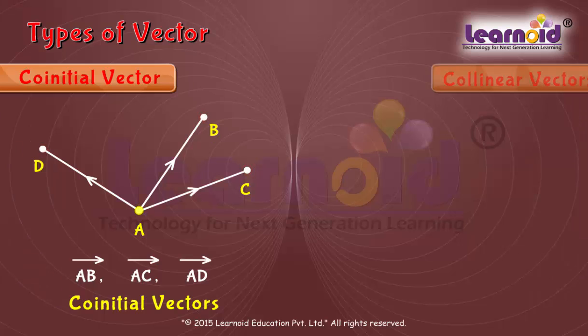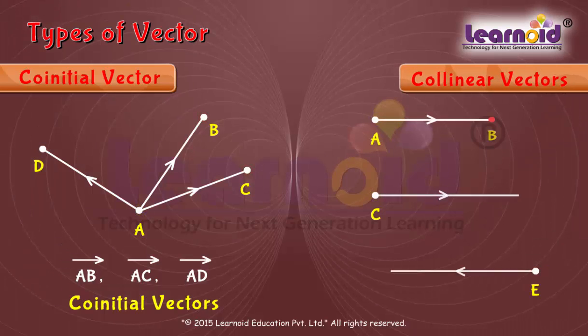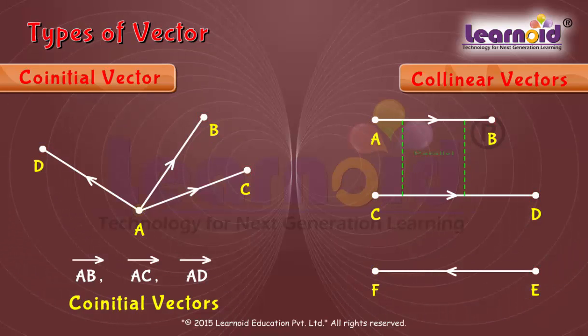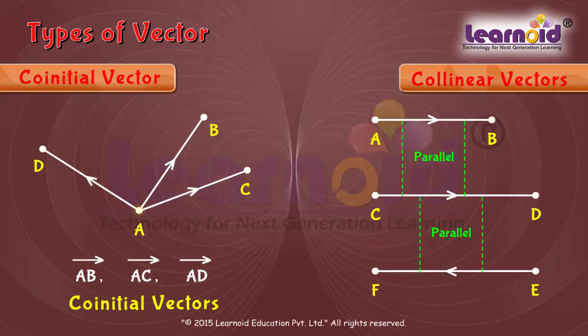Two or more vectors are said to be collinear if they are parallel to the same line, irrespective of their magnitude and directions.